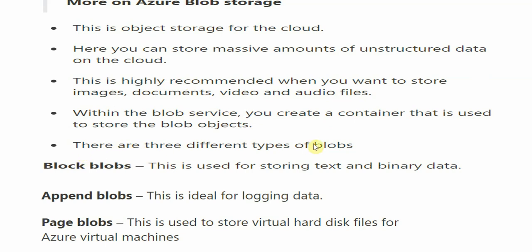There are three different types of blobs: block blobs, append blobs, and page blobs. Block blobs are used for storing text and binary data. There's also a Storage Account Explorer tool that I'll talk about in my upcoming video — you can directly connect using that tool to all these kinds of storage.